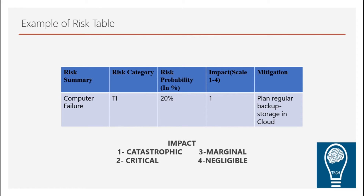Here is a simple example: a computer failure falls into the technical issues category with a probability of 20% in a gaming environment. The impact is very high — considered catastrophic. You can see the impact levels in the table below. The mitigation plan includes regular backups and cloud storage. This is how you create a risk table.